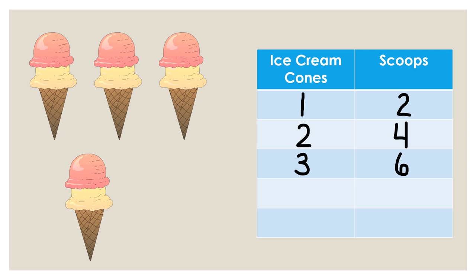Let's add another ice cream cone. How would we record the data in the next row of our table? Take a moment and share with someone nearby. Did you say that we would need to put a four in the ice cream cone column and an eight in the scoops column of the table?